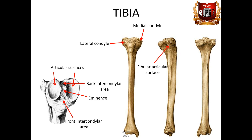In the body of the tibia we distinguish an acute anterior margin, which at the top thickens and forms the tuberosity of the tibia, tuberositas tibiae, to which the quadriceps of the femur is attached. The lateral margin is turned towards the fibula and is called interosseous. The medial margin is rounded. Three surfaces are distinguished in the body of this bone. There is a rough line of the soleus muscle, linea musculi solei, on the back surface.